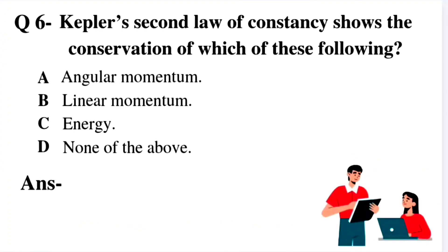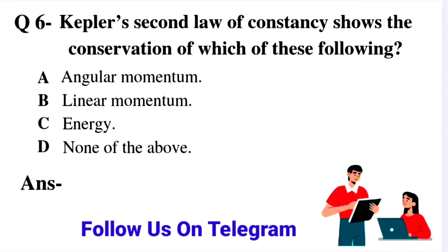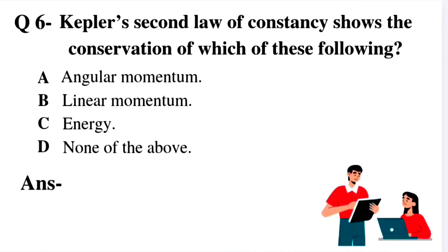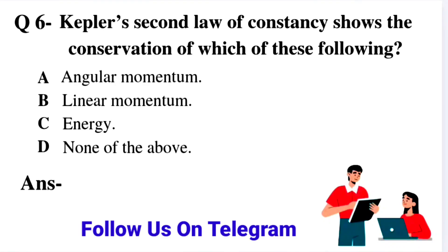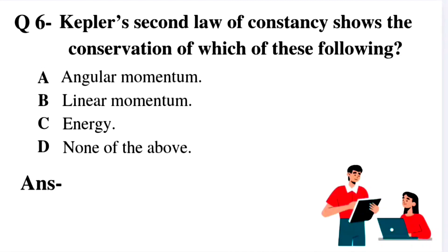Question number 6: Kepler's second law of constancy shows the conservation of which of the following — Option A: angular momentum. Option B: linear momentum. Option C: energy. Option D: none of the above. According to Kepler's second law, a planet sweeps equal areas in equal times in its elliptical orbit, which means the angular momentum of the planet is constant. So option A is the right answer.